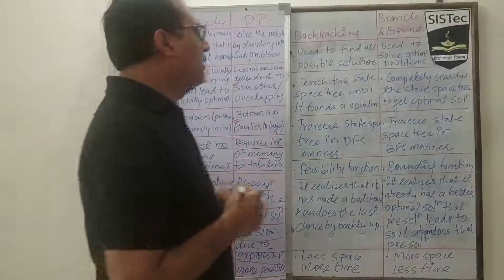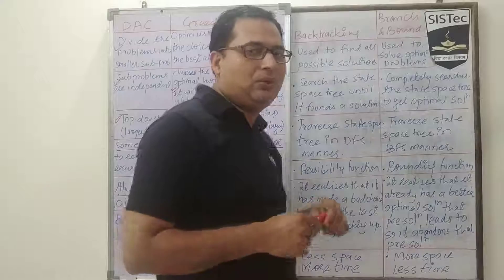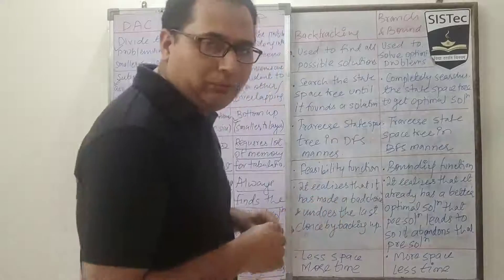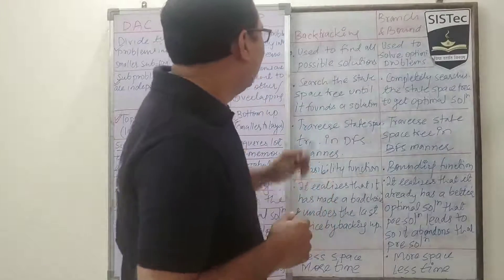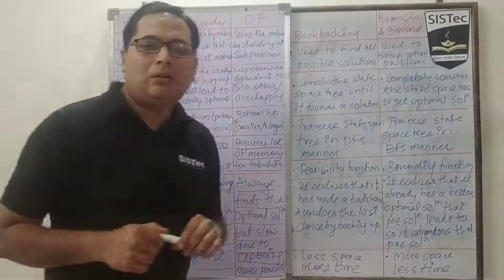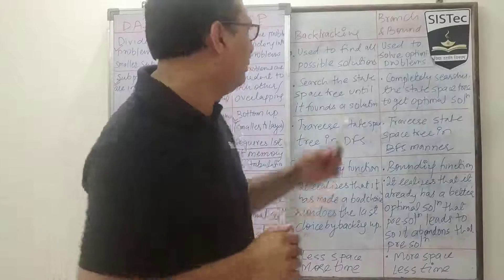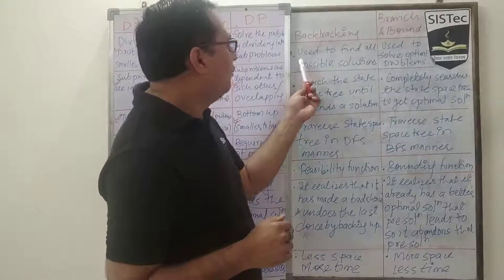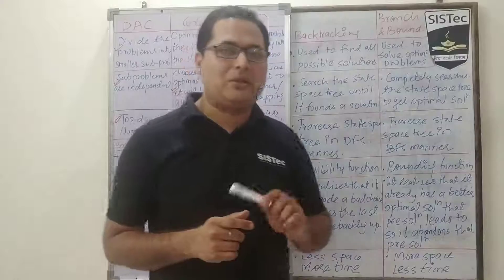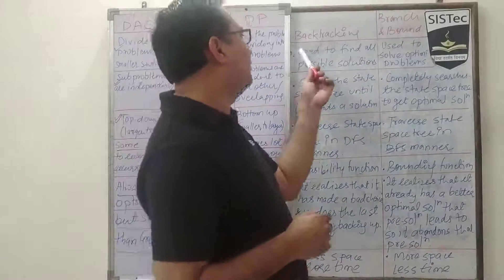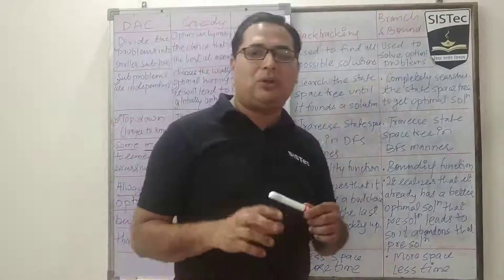Let's move towards the remaining two strategies: backtracking and branch and bound. The first point is that backtracking is used to find all possible solutions available to the problem, whereas branch and bound is used to solve optimization problems. Here, backtracking is about all possibilities, while branch and bound is about finding the optimized solution.